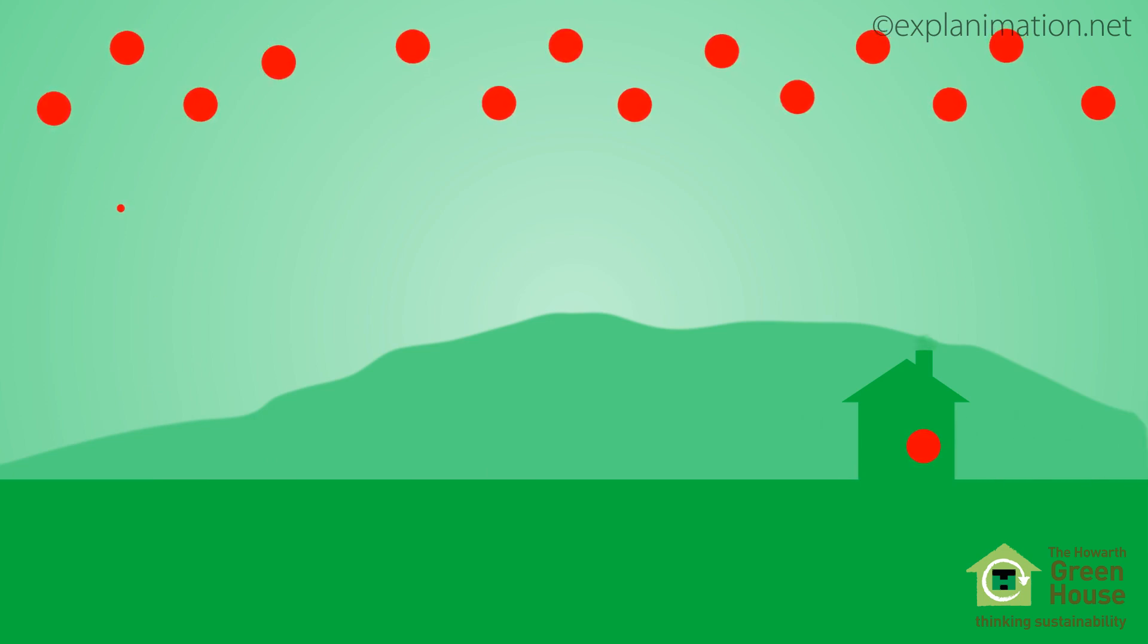The wood is burnt, providing heat. The CO2 absorbed by the tree is released back into the atmosphere. New trees are grown and the cycle continues.